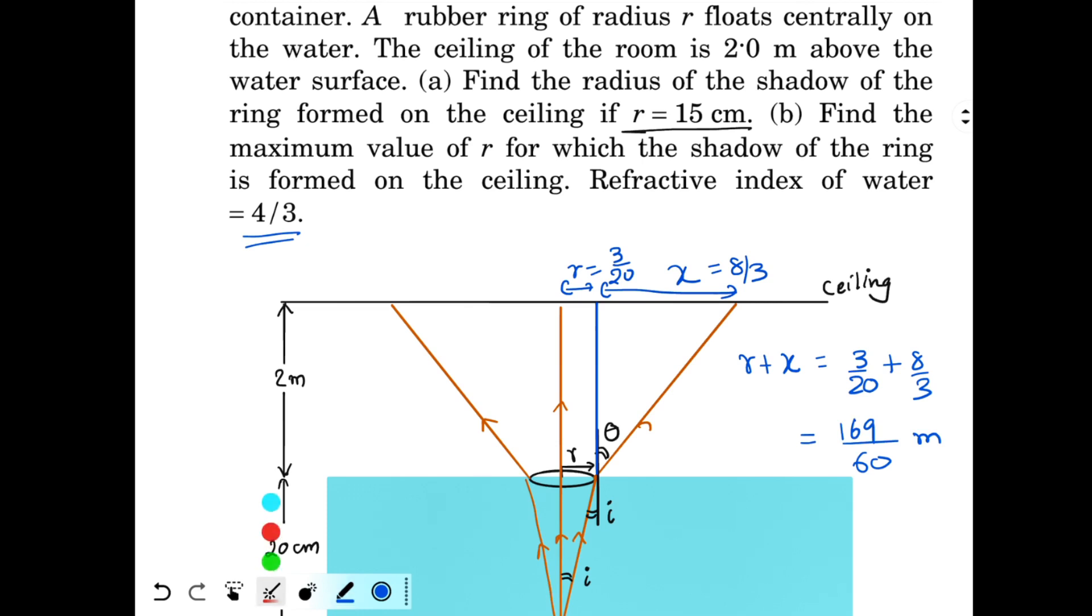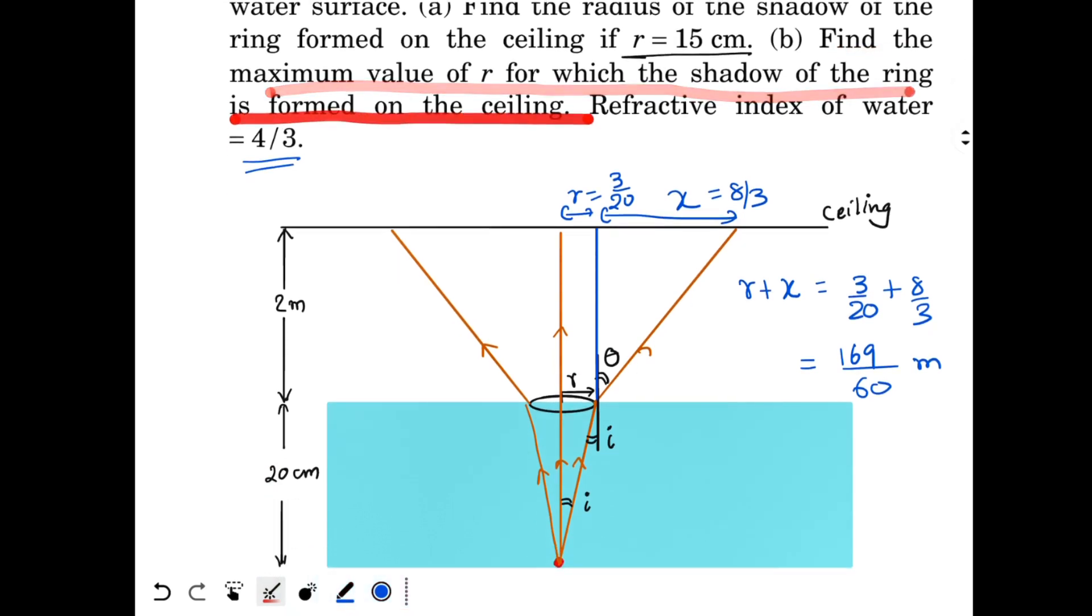Now the second part of the question is asking find the maximum value of r for which the shadow of the ring is formed on the ceiling. So see that is easy. The light should come out on the other side. If I increase the radius of the ring then the light coming over here could get reflected back inside because of total internal reflection. So the maximum radius of the ring should be such that...